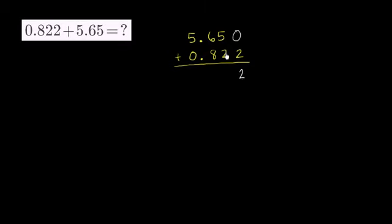5 hundredths plus 2 hundredths is 7 hundredths. 6 tenths plus 8 tenths is 14 tenths.